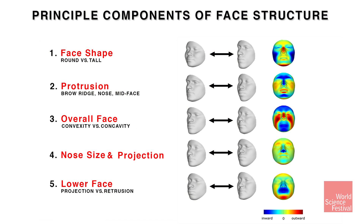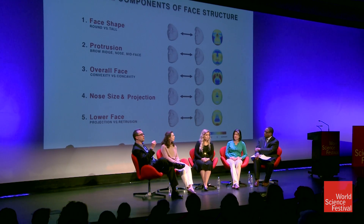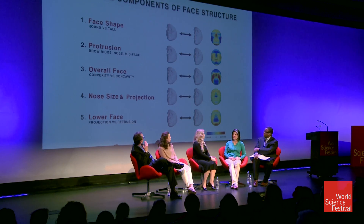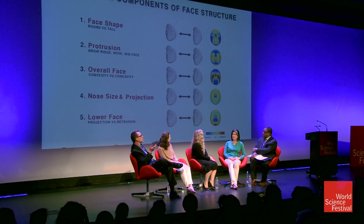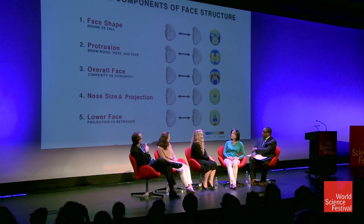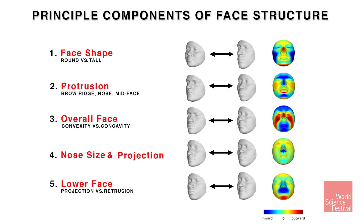What you see in this figure here are the first five principal components. The face has all these features and we put a mesh over the face, then do data reduction to identify key features that are independent of one another. These are ordered by the amount of total variation they explain. Those gray faces are the extremes of the PC axes — the first one is round face versus tall face, where the round face is more feminine and the tall face is more masculine.